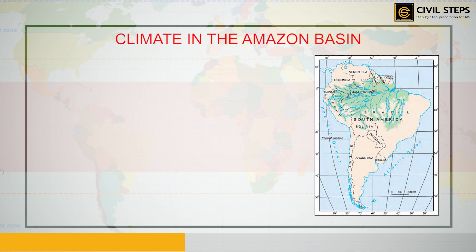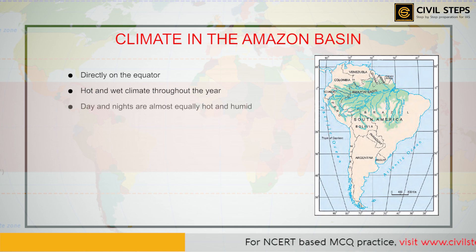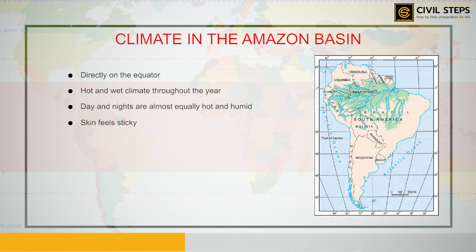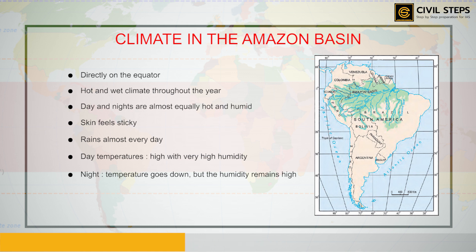The Amazon basin stretches directly on the equator and is characterized by a hot and wet climate throughout the year. Both day and nights are almost equally hot and humid — the skin feels sticky and it rains almost every day without much warning. Day temperatures are very high with high humidity, and at night the temperature goes down but the humidity remains high.